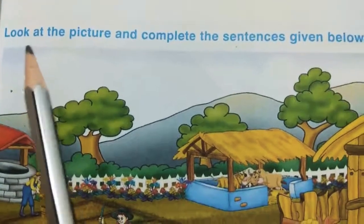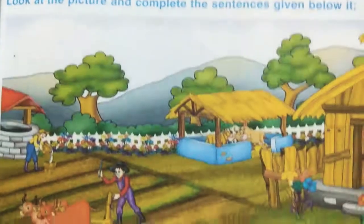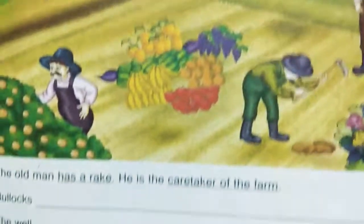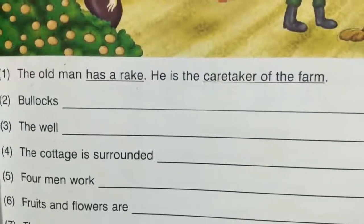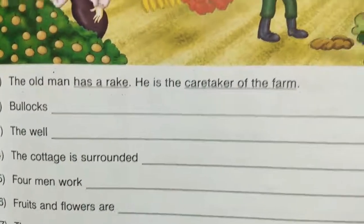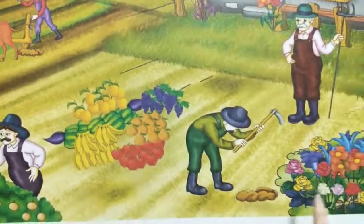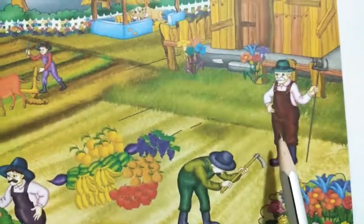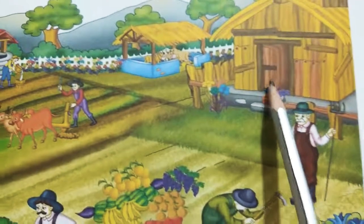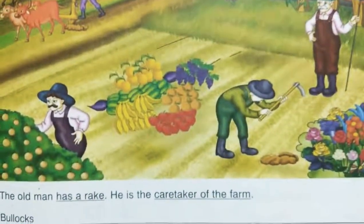Let us read the question: Look at the picture and complete the sentences given below it. They have given a picture of a farm here, and below that picture they have given some incomplete sentences. By seeing the picture, we should complete these sentences. So in the picture, you can see so many fruits, flowers, and an old man here. Some workers are working in the field. You can see a cottage, and here you can see a well.